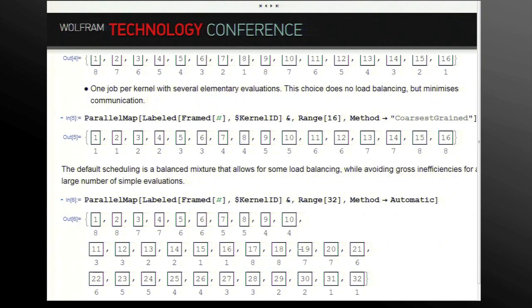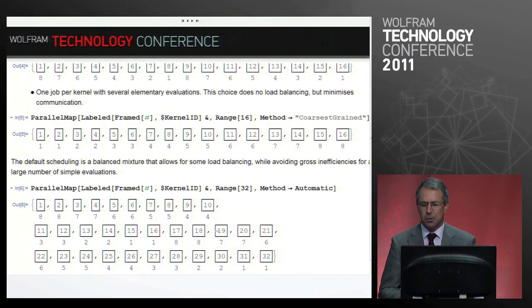Now the default is something in between. Here I do 32 of those, so you can see it splits it up into two jobs per kernel, each working on two evaluations. The default is somewhere in the middle. It avoids gross inefficiency on one hand and still gives you a little bit of load balancing.